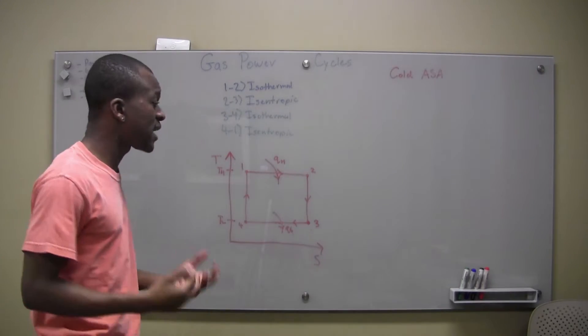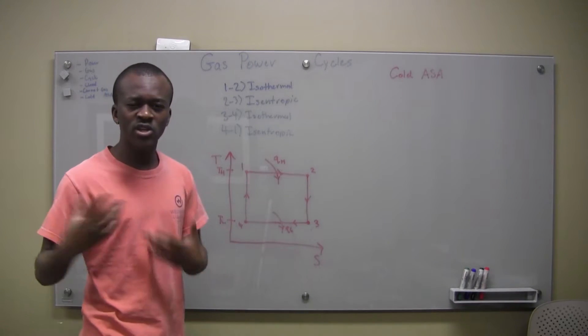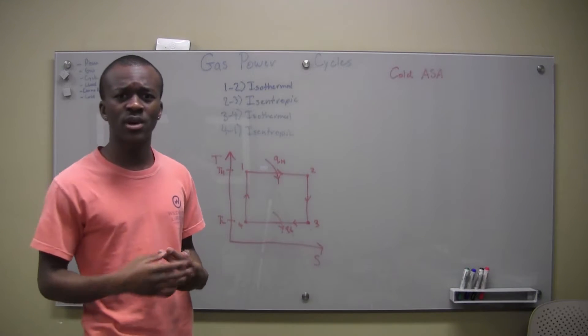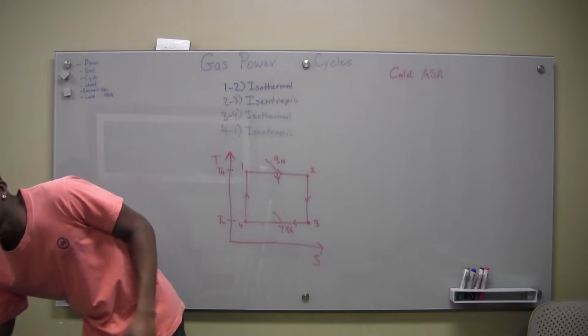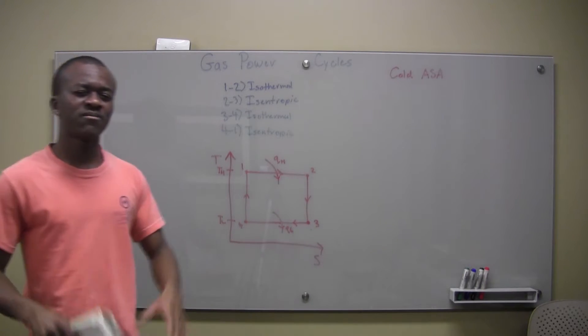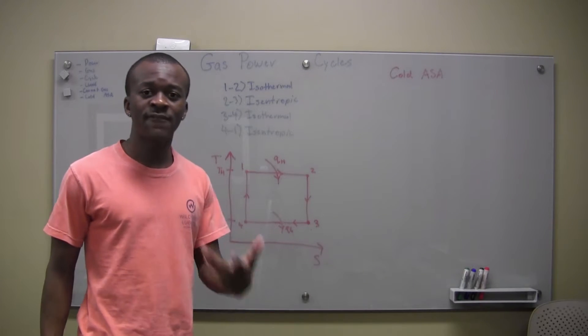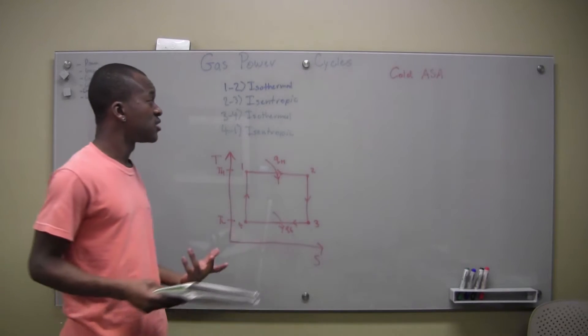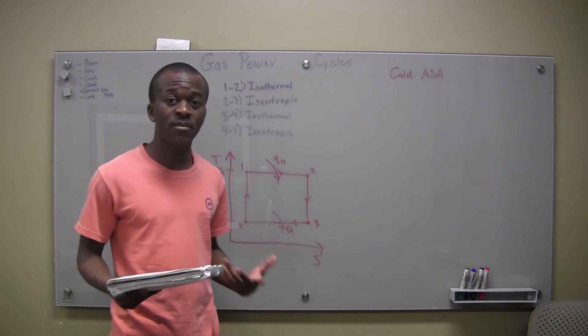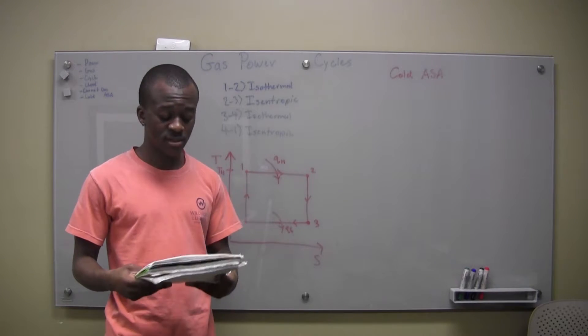And we're dealing with this air and fuel being compressed, being burnt and everything. But there are so many irreversibilities that we can take into account when dealing with these. So these cold air standard assumptions help us to just look at a simplified version. So first of all, we assume that air and fuel mixture to be an ideal gas. So we treat that air and fuel mixture, although it is a mixture of both, we treat it to be like it's an ideal gas.